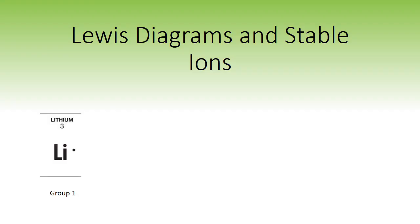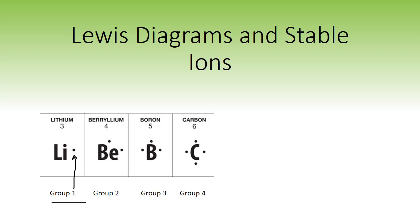Let's take a look at a couple of examples. Group 1 elements have one valence electron, so we use one dot. Group 2 elements have two dots, group 3 elements have three dots, and group 4 elements have four.